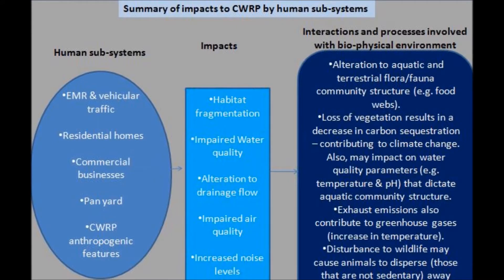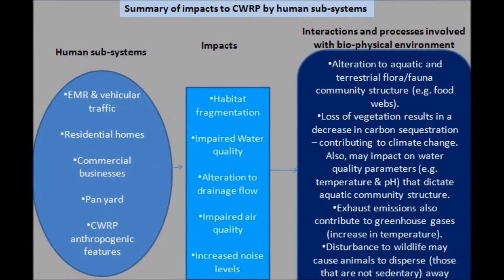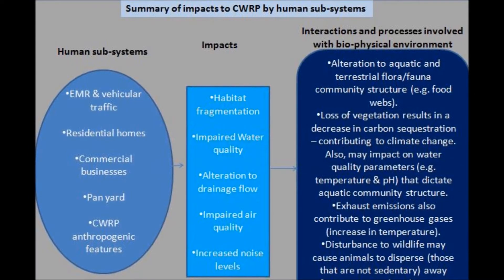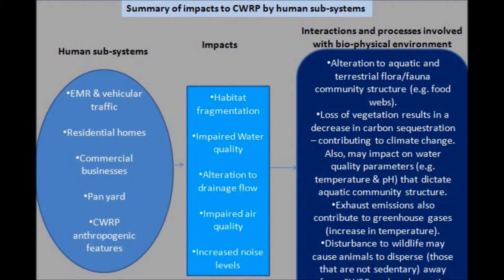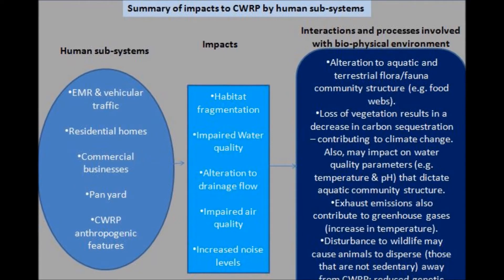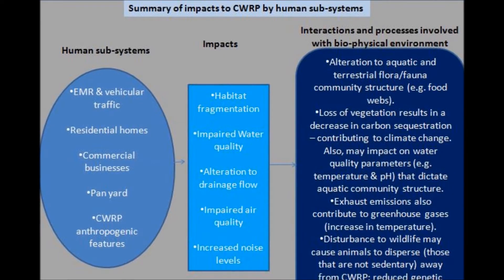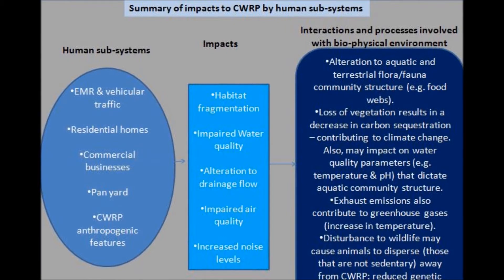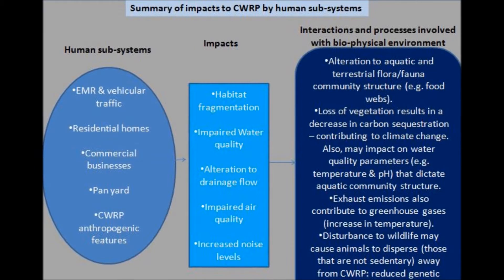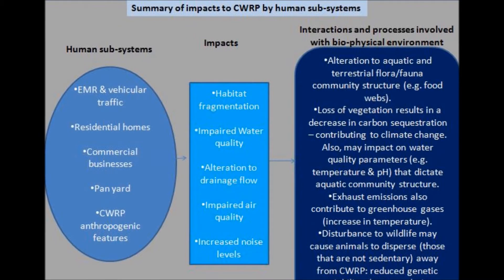To conclude, this chart shows a summary of the impacts to the Cleaver Woods Recreational Park by human subsystems. The human subsystems include the Eastern Main Road and vehicle traffic, residential homes, commercial businesses, panyard, and the anthropogenic features of the park. The main impacts from these subsystems include habitat fragmentation, impaired water quality, alteration to drainage flow, impaired air quality, and increased noise levels.